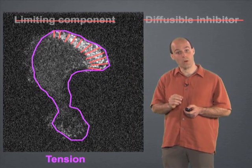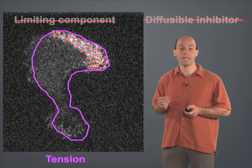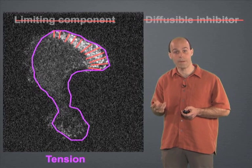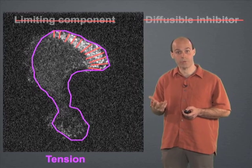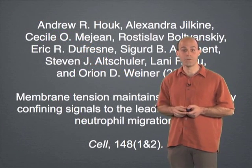Our data on how cells polarize has significance for the general process of polarity. And because many diseases result from the misregulation of polarization, our data has significance for everything from cancer metastasis to atherosclerosis. For more information, we hope you'll check out our paper in the latest issue of Cell. Thanks.